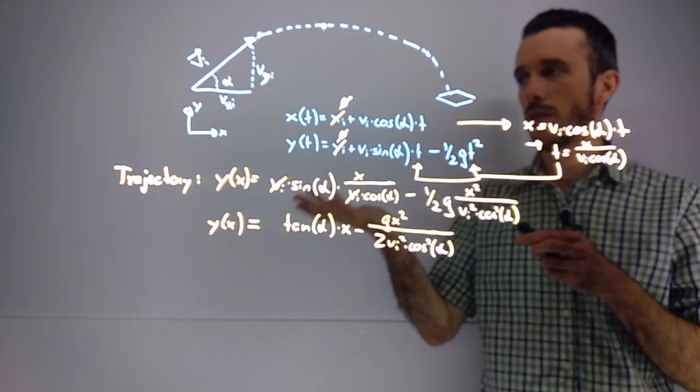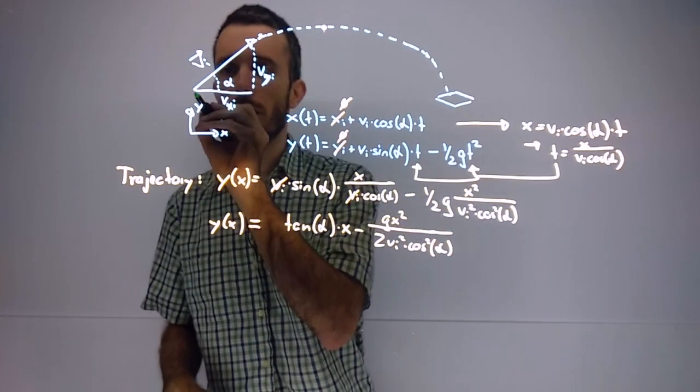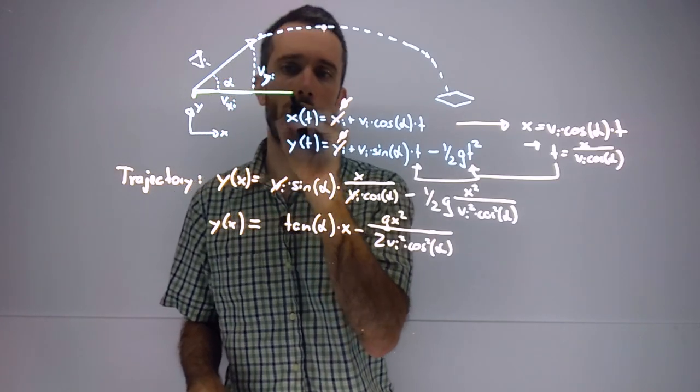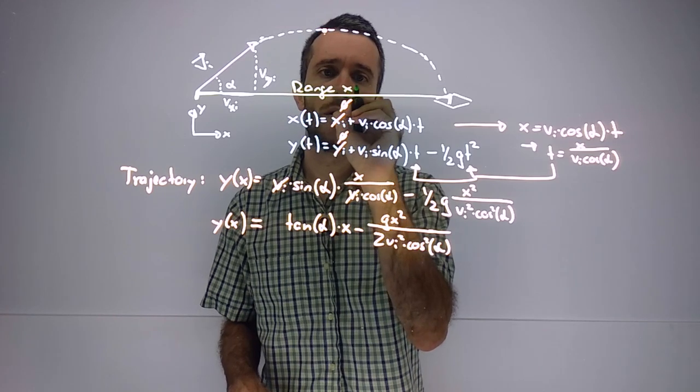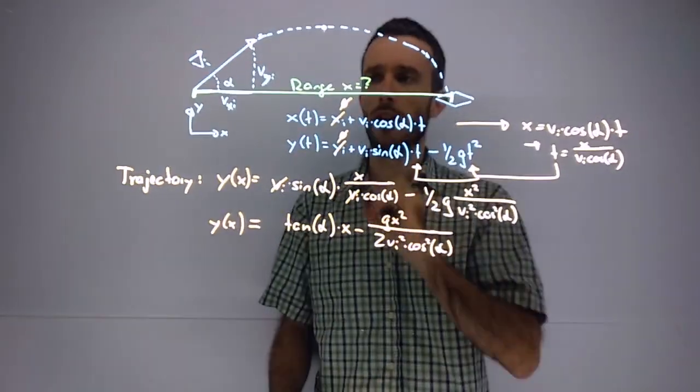Now the next step is figuring out the range equation. The range being, if I throw it from ground to ground, how far did the projectile fly?